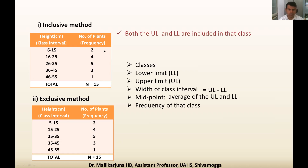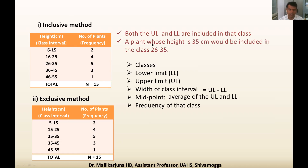In the inclusive method, both the upper limit and lower limit are included in that class. For example, 6 and 15 are both included in the class 6 to 15, and 26 and 35 are both included in the class 26 to 35. So a plant whose height is 35 centimeter would be included in the class 26 to 35 — there is no confusion.